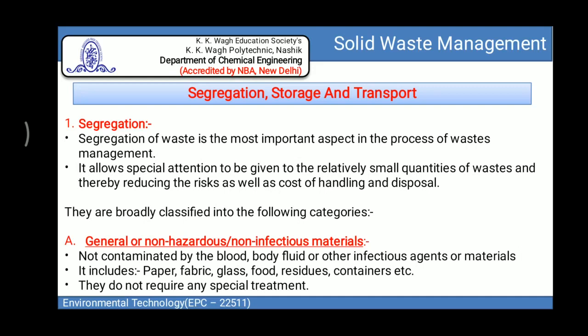Biomedical waste is first segregated — meaning separation takes place initially. After segregation, storage occurs in different containers, and then the waste is transported to the dumping area or treatment area. Segregation of waste is the most important aspect of waste management; it allows special attention to be given to relatively small quantities of waste, thereby reducing the risk as well as cost of handling and disposal.